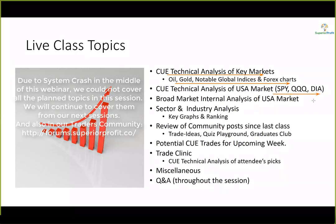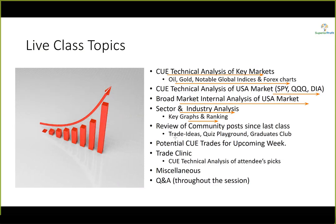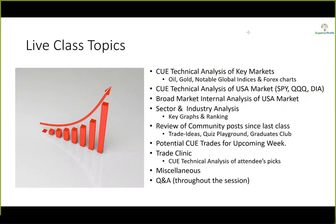In today's session, we'll go through technical analysis of key markets including oil, gold, India Nifty index, and forex pairs. We'll also look at SPY, QQQ, DIA, and IWM — the Russell 2000 ETF, starting from this week. We'll cover broad market internal analysis, sector and industry analysis through key graphs and ranking tables, and potential trade ideas. We will use Q Vital, Q Global, Q Elite, and sector and industry analysis for a holistic look at stocks.